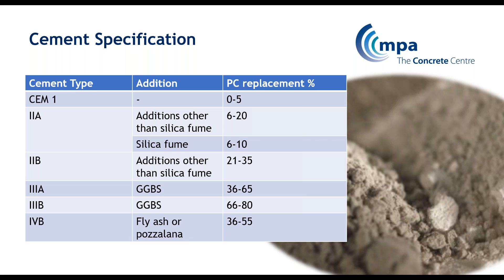It's various different types of cementitious material that can be put with Portland cement in order to give various different properties. One of the things is that most of the additions we use are in fact waste materials, so we're actually helping to take materials out of the waste stream that would otherwise be sent to landfill. You can see from the table here these are very broad cement types, with lots of subdivisions, all in BS 8500, which is the standard for specifying concrete in the UK.